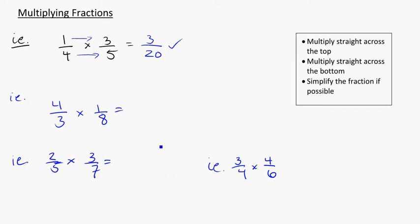So looking at a few examples, multiplying straight across the top: 4 times 1 gets me 4, 3 times 8 gets me 24. And stopping to check, can 4 go into 24? It can. 4 times 6 will get me 24, so I know that's going to be equivalent to 1 sixth.